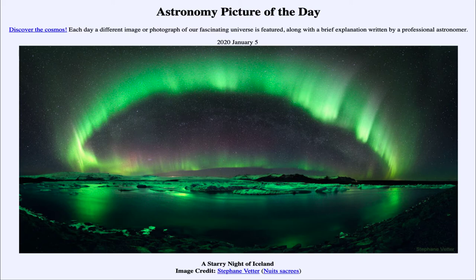That gives the aurora this very green glow that we see here in the sky, and then reflected down in the lake below, giving us a pattern of almost a ring. We can see it again down below reflected in the lake. In between the aurora, we can also see our Milky Way galaxy stretching across the sky.